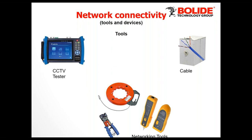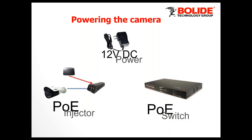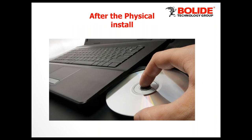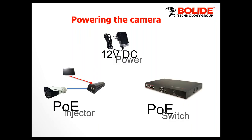Now let's talk about what tools you would need to install. Of course you'll need cable — if you're making your own cable, depending on length, you'll need crimping tools and a CCTV tester. If you're using pre-made cables, it's pretty much plug and play. You have three options to power up the camera: 12V DC power supply, a PoE injector if you're not using one of our NVRs, or a PoE switch. If you use a Bullwide NVR with built-in PoE, it's simple plug and play.